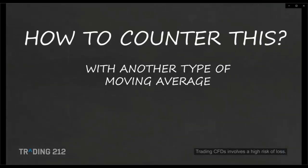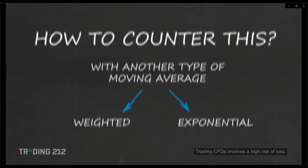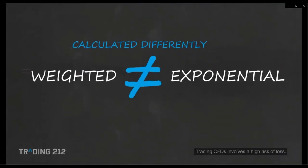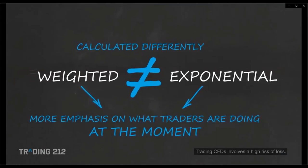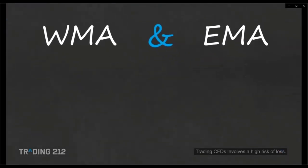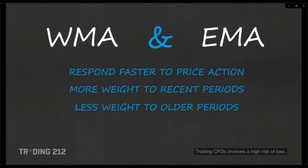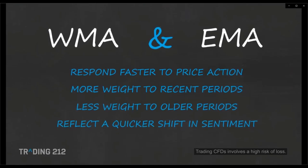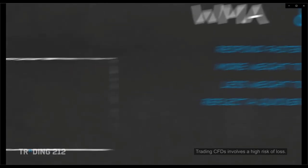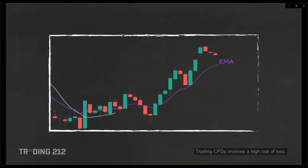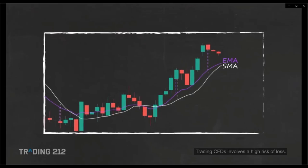To counter the SMA's slowness, you can use a weighted or exponential moving average. Both give more weight to recent periods, emphasizing what traders are doing at the moment, and respond faster to price action. They reflect a quicker shift in sentiment due to changes in supply and demand or important news events. If you plot an EMA and an SMA on the same chart, the EMA will be closer to the current price.